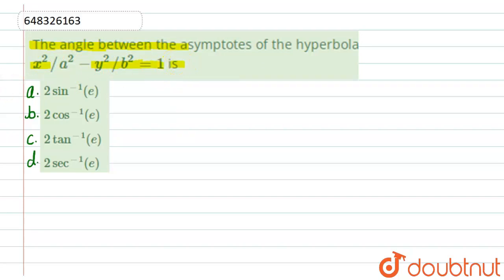So for this, let's see the solution here. Simply in this question, we have given an equation of hyperbola that is x squared divided by a squared minus y squared divided by b squared equals 1, and we have to find the angle between the asymptotes of hyperbola. So first of all, the asymptotes of hyperbola is given by y equals plus minus b divided by a times x. Let's suppose this is equation number 1.